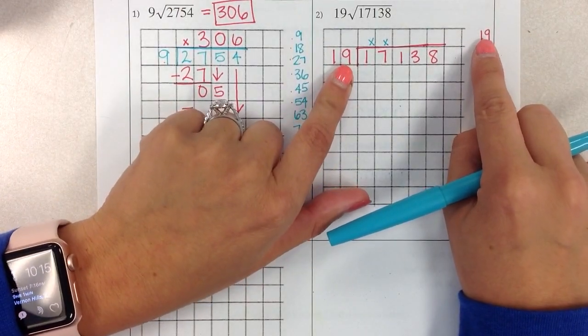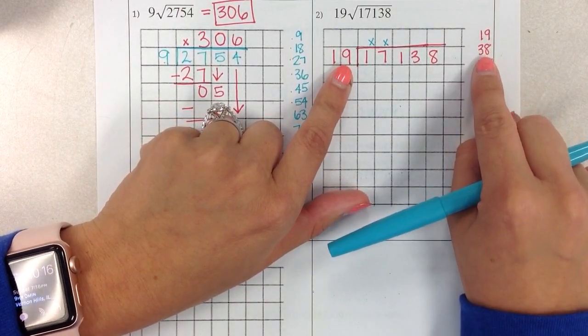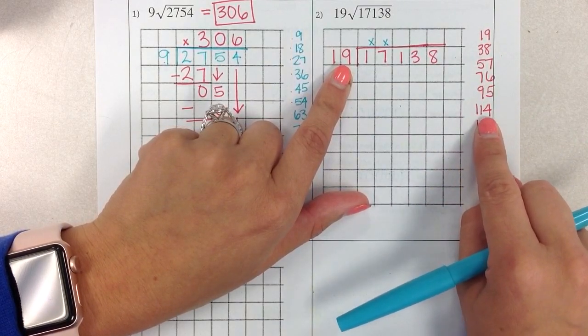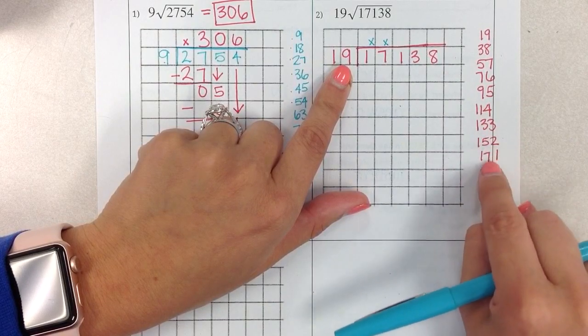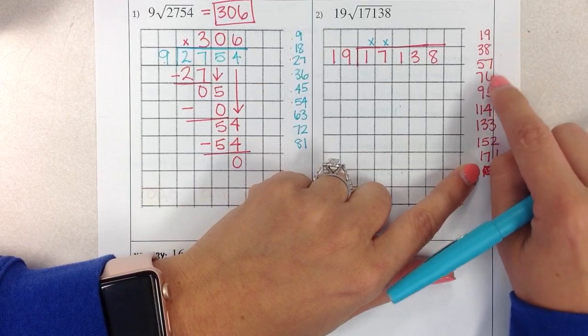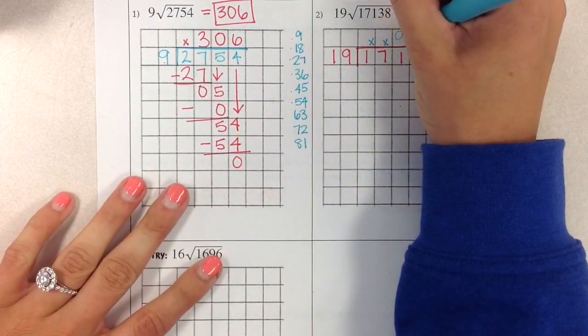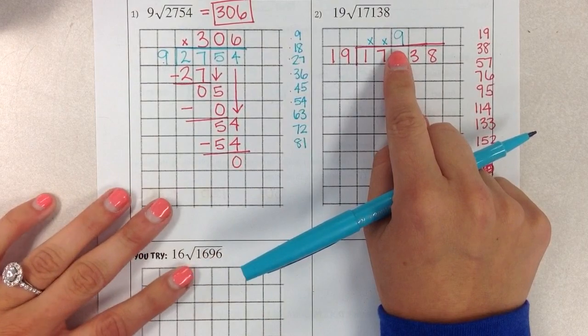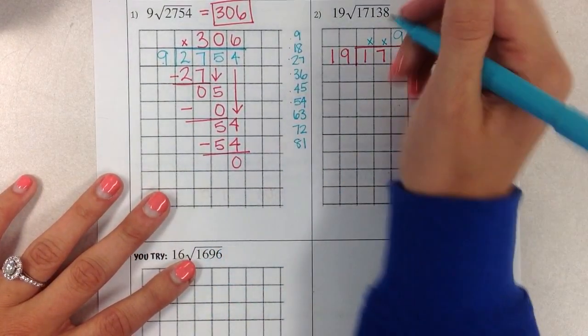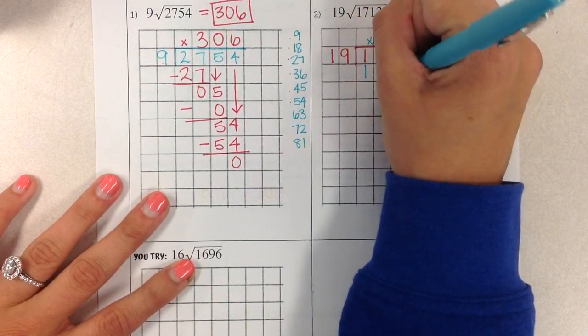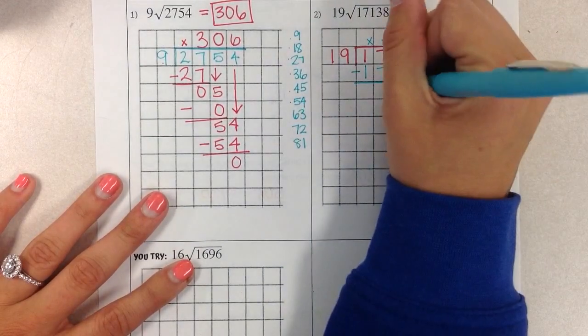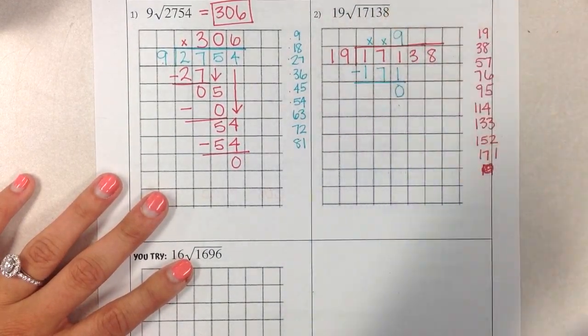So how many times does 19 go into 171? So 19 is smaller, 38 is smaller, 57 is smaller, 76 is smaller, 95 is smaller, 114 is smaller, 133, 152, 171. It goes in exactly 9 times. So we put our 9 in our quotient. Step 2 is to multiply. 19 times 9, we just saw that, is 171. Step 3 is to subtract. 171 minus 171 is 0.